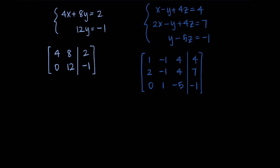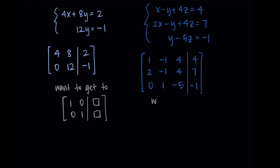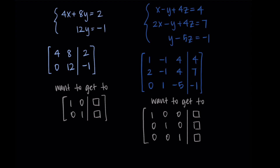Now that we have these two matrices representing our systems, our goal is to row reduce them to get to reduced row echelon form. Reduced row echelon form helps us see the answers really quickly — it's just an alternative way of finding the solution rather than doing it by hand. In two dimensions we want ones on the diagonal and zeros in the other spots, and same in three dimensions. The right-hand side of the matrix will give us the solutions.